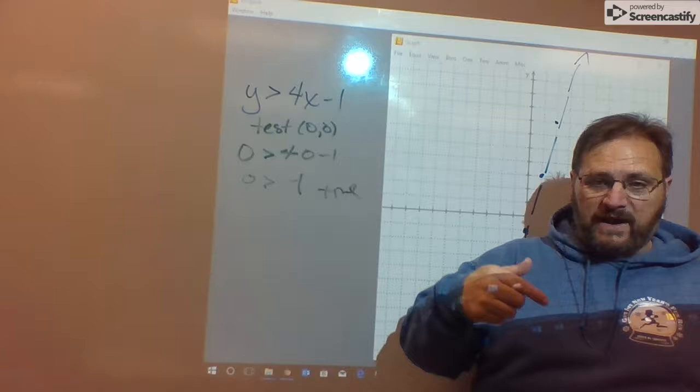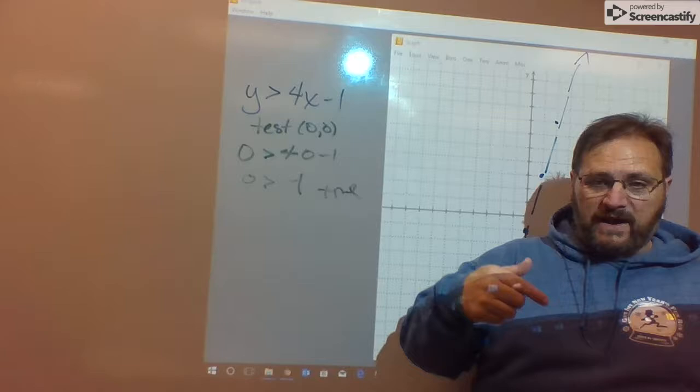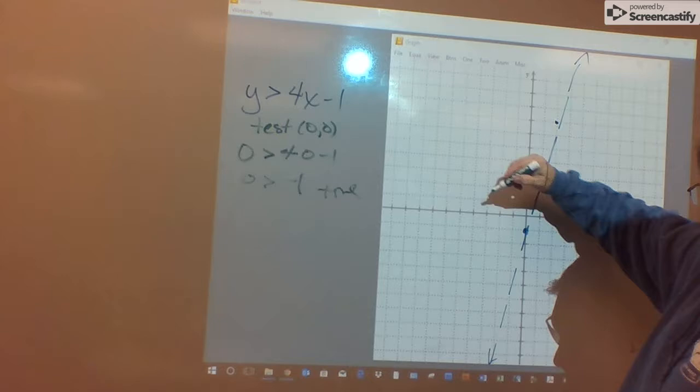Always shade toward your test point if you get a true sentence. Always shade away from it if you don't. So, shade to the left. And there you have your second inequality graph.